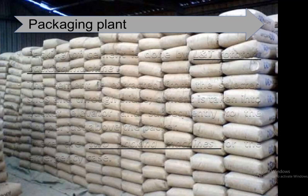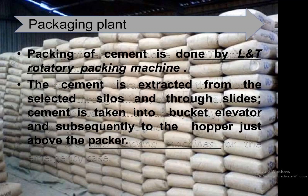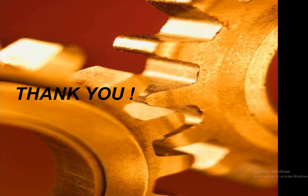The final plant in the cement industry is the packing plant. Packing of cement is done by an L&T rotary packing machine, and various modern machines are also used. Cement is extracted from selected silos and taken through slides to a bucket elevator and subsequently to the hopper above the packer. This video covers the complete manufacturing process of cement — stay connected and subscribe the channel.